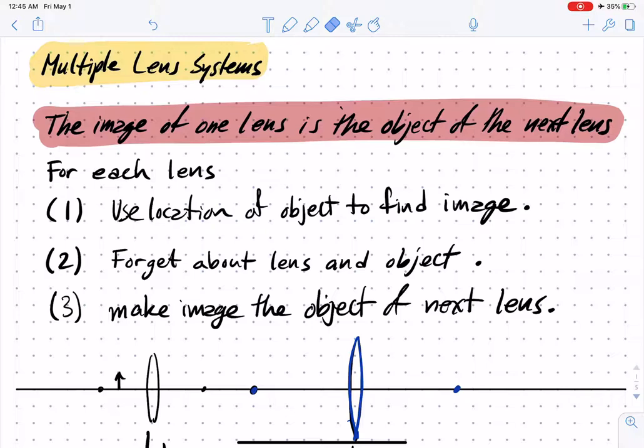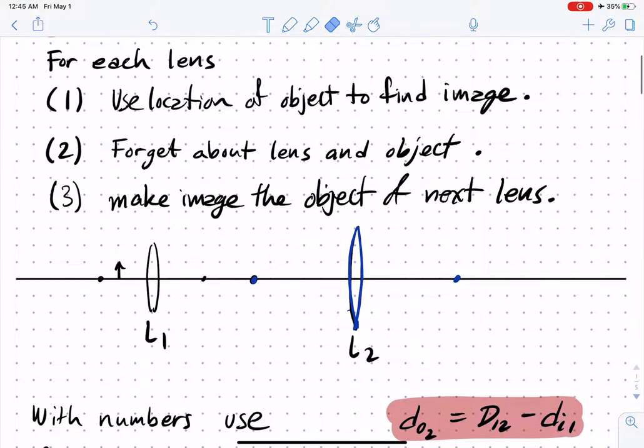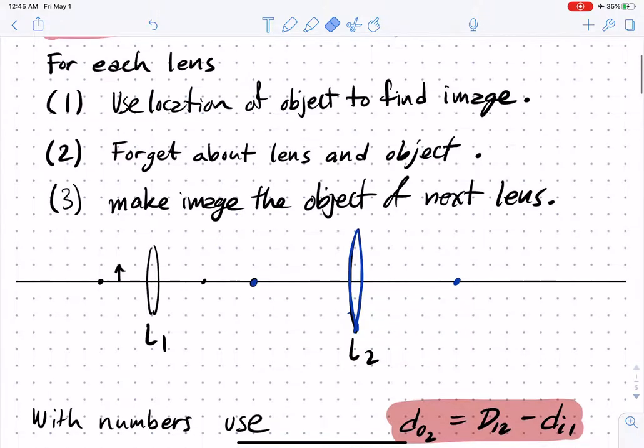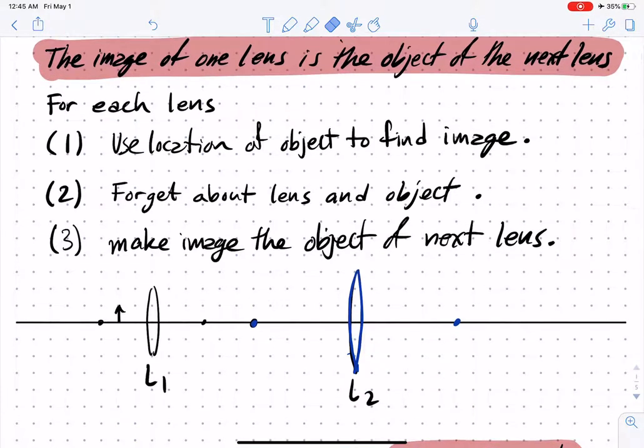Let's look at an example. Here we have two lenses - our first lens and the second lens. Here are the focal points of the second lens, and these are the focal points of the first lens. And here's our object.